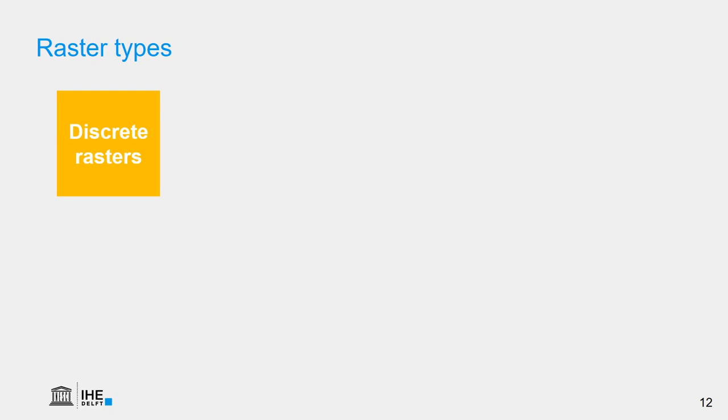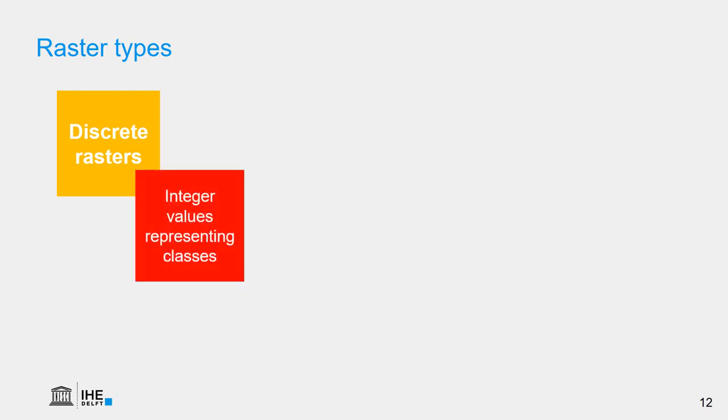When we work with raster data, we have to take care of different raster data types. They influence the visualization and the type of calculation that we can do. There are discrete rasters — the cells of discrete rasters contain integer values and they represent classes.